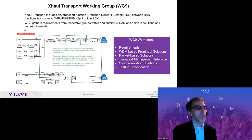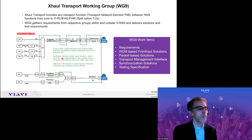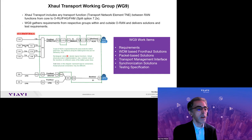In Workgroup 9, we basically deal with all the transport aspects between the RAN components. The area in the green dotted line is what we try to cover — transport network elements, TNE as the abbreviation. You can recognize the different RAN components here. This is a very simplified view of the world; the real world is much more complicated and diverse.